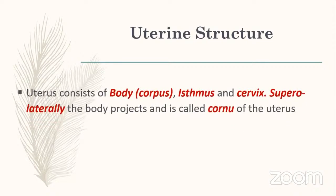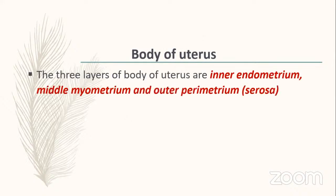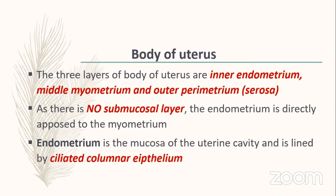Uterine structure: the body, isthmus, and cervix. Superolaterally the body projects as the cornu of the uterus, to which the round ligament, fallopian tube, and ovarian ligament are attached. The three layers of the uterine body are: inner endometrium, middle myometrium, and outer perimetrium. There is no submucosal layer — endometrium is directly opposed to myometrium. Endometrium is lined by ciliated columnar epithelium.